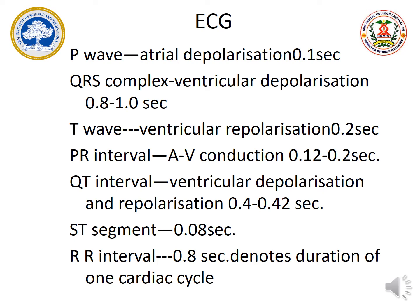Next is QRS complex. The P wave is a small positive wave. In the QRS complex, Q is a small negative wave, R is a sharp positive wave, and S is again a small negative wave. This is going to occur with the help of ventricular depolarization.